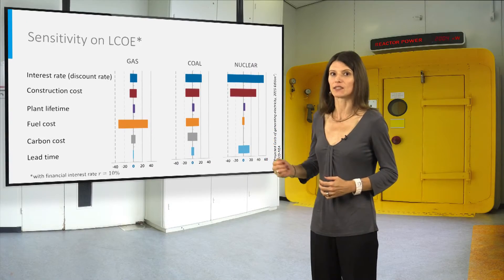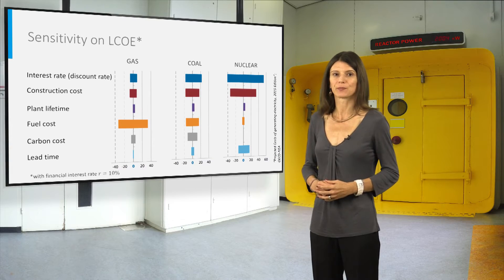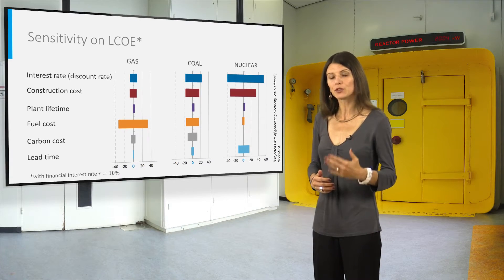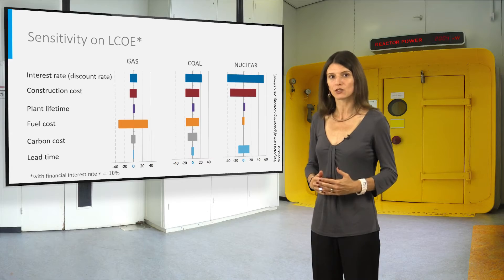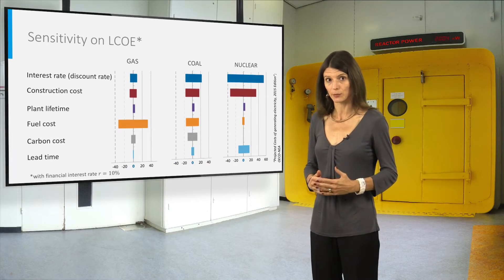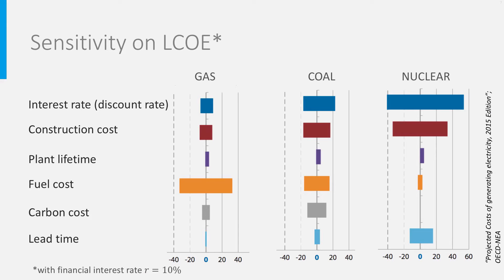Here a sensitivity analysis on the LCOE is provided. Each input is increased and decreased by 50% and its impact on the LCOE is calculated separately. The percentage change in the LCOE is represented in the graphs on the screen. The most sensitive parameter is the financial interest rate. Construction cost overruns and construction lead time are major concerns, since these can seriously undermine the nuclear project economics by deteriorating the profitability and increasing the LCOE.